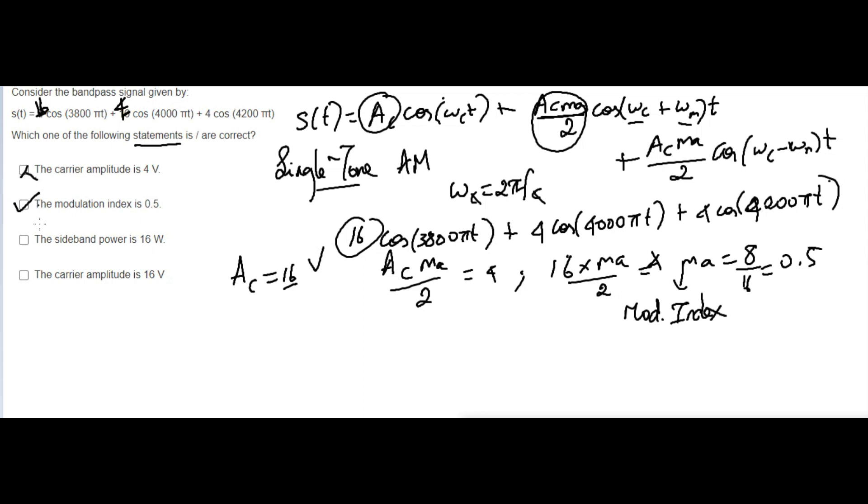They asked about sideband power. Sideband power means Ps. So Ps formula you know that, right? Ps formula is Pc times ma squared divided by 2. That is very important: Pc*ma²/2.